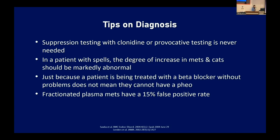A few tips: never suppress or provoke a suspected pheochromocytoma — just do lab testing. In a patient with spells, the degree of increase in catecholamines and metanephrines should be markedly abnormal — three to four times the upper limit of normal. If having spells but not seeing that, the spells are not due to a pheochromocytoma. Also, just because a patient is on a beta blocker without problems does not mean they don't have a pheo. Plasma metanephrines have a 15% false positive rate; many practitioners start with plasma metanephrines since it's easier than a 24-hour urine. A negative result is reassuring that the patient doesn't have it.